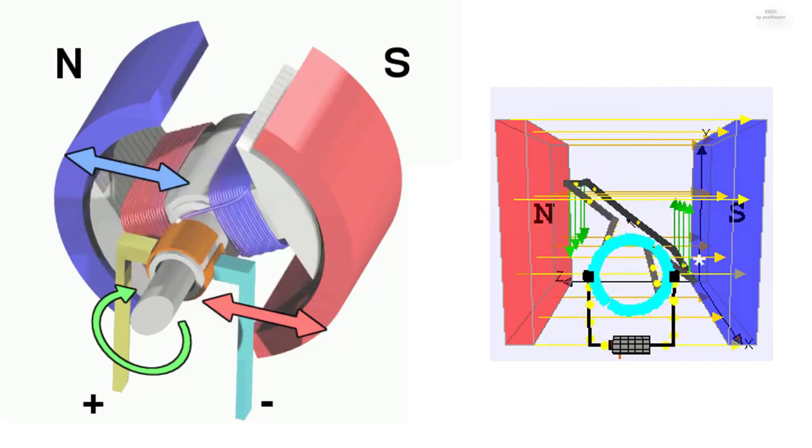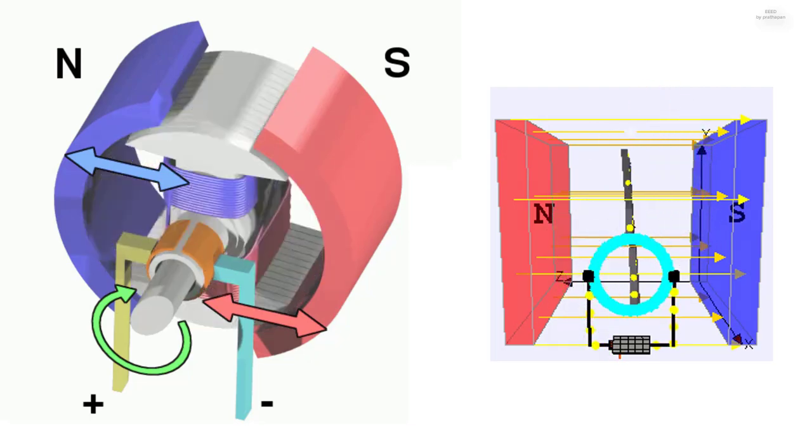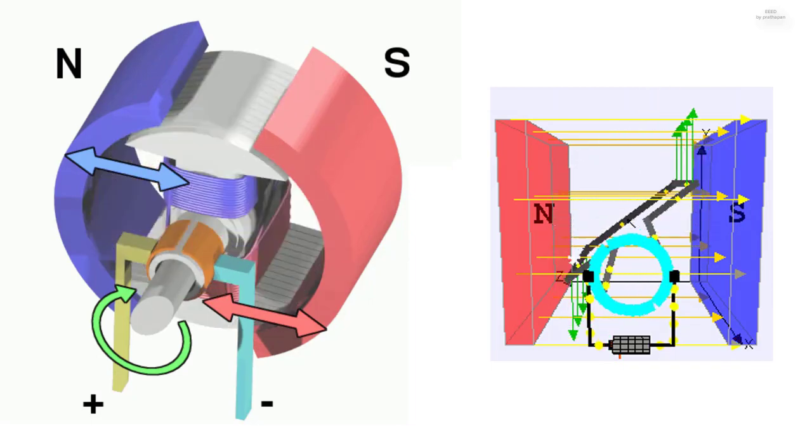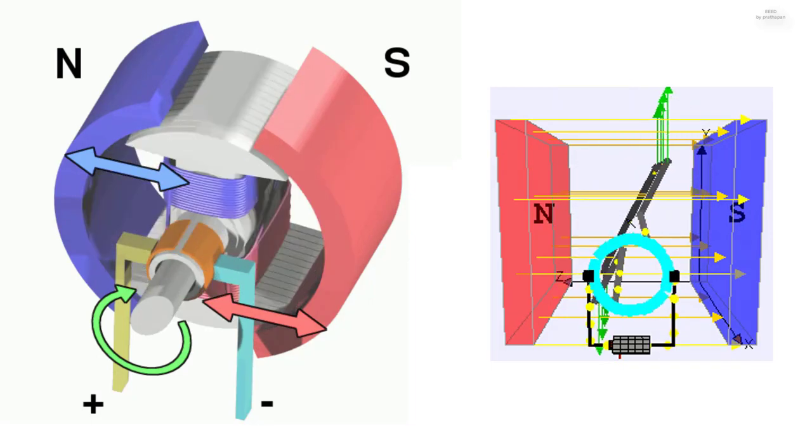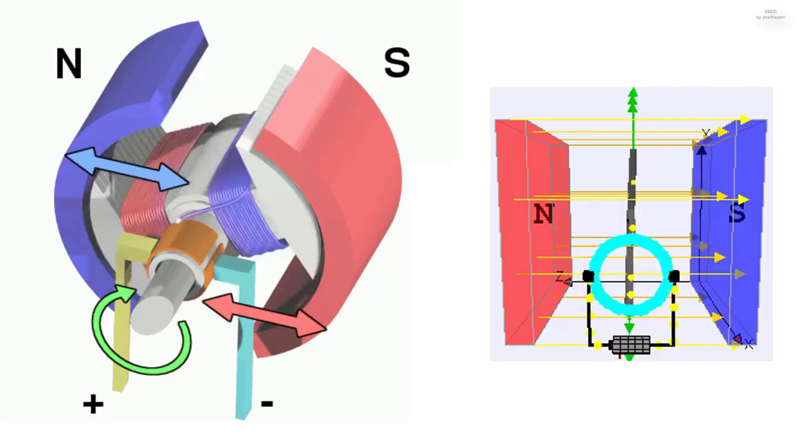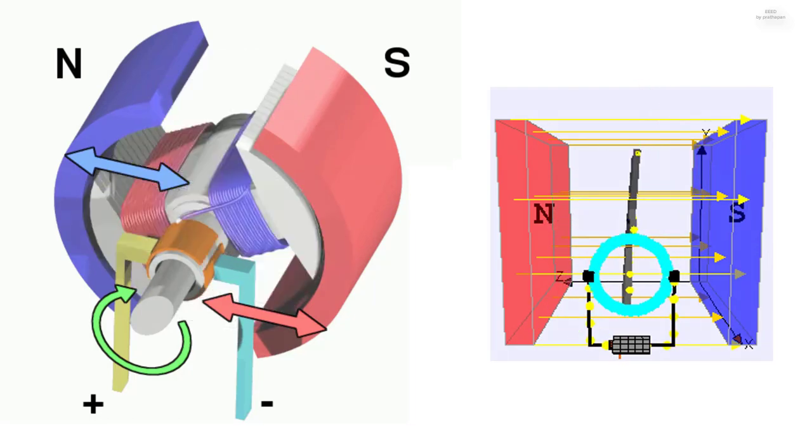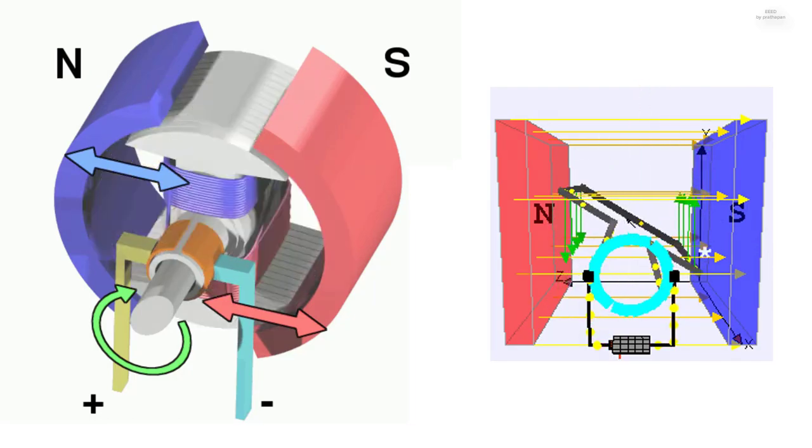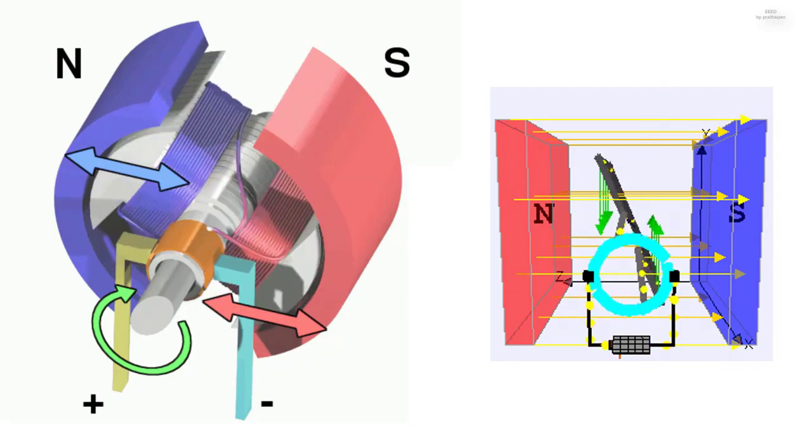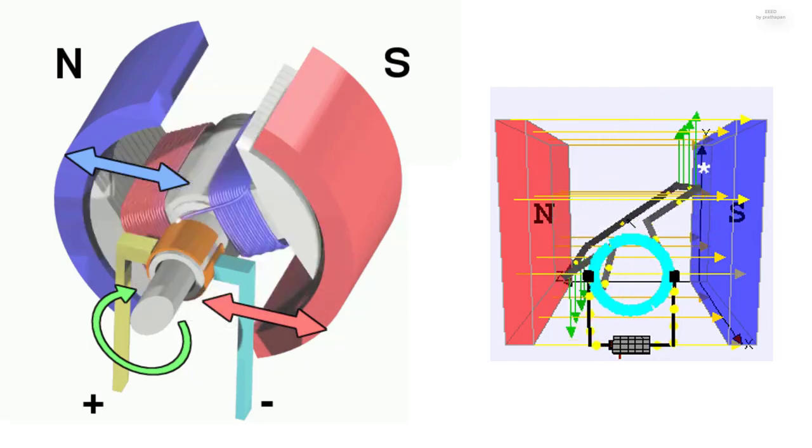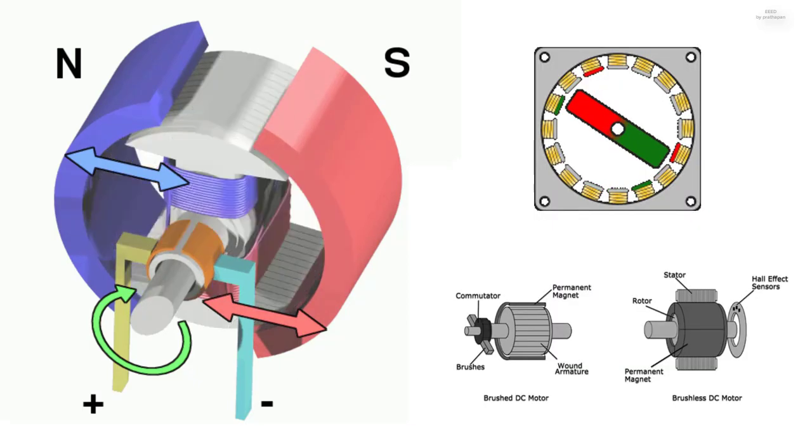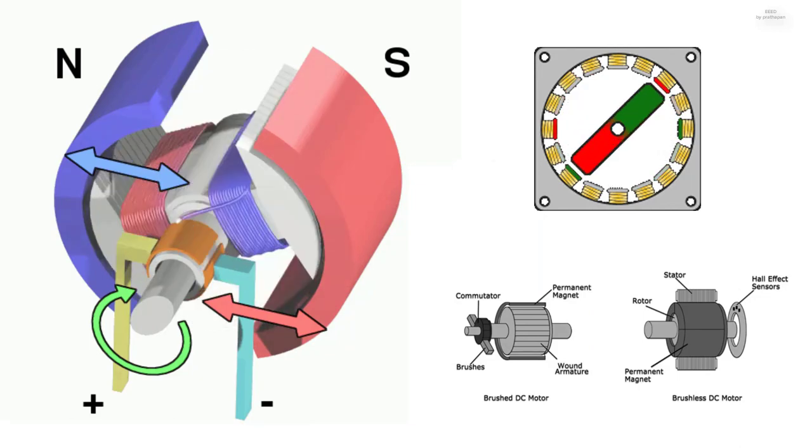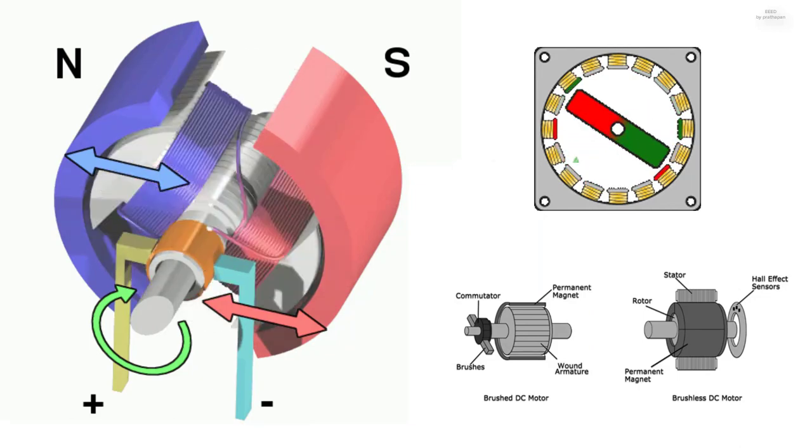Since neither the direction of motion nor the direction of the magnetic field inside the motor/generator has changed, the direction of the electric current in the motor/generator has reversed. This follows from the second law of thermodynamics: the generator current must oppose the motor current, and the stronger current outweighs the other to allow the energy to flow from the more energetic source to the less energetic source.